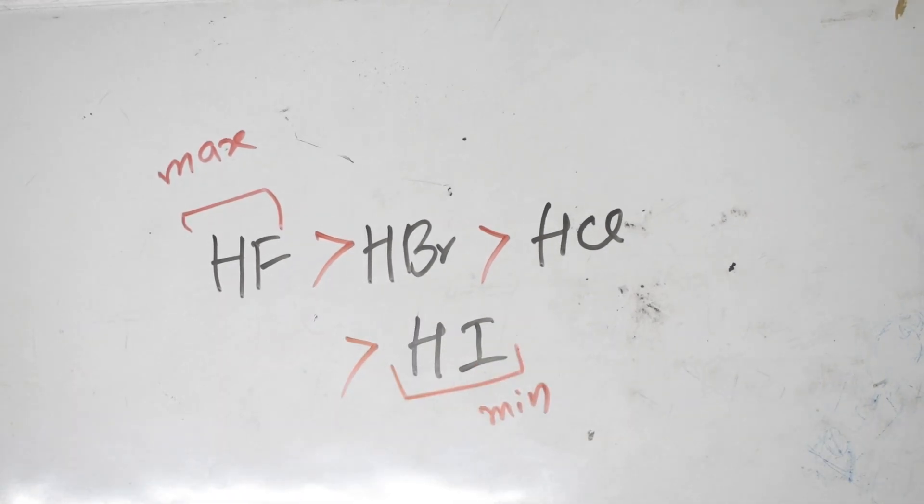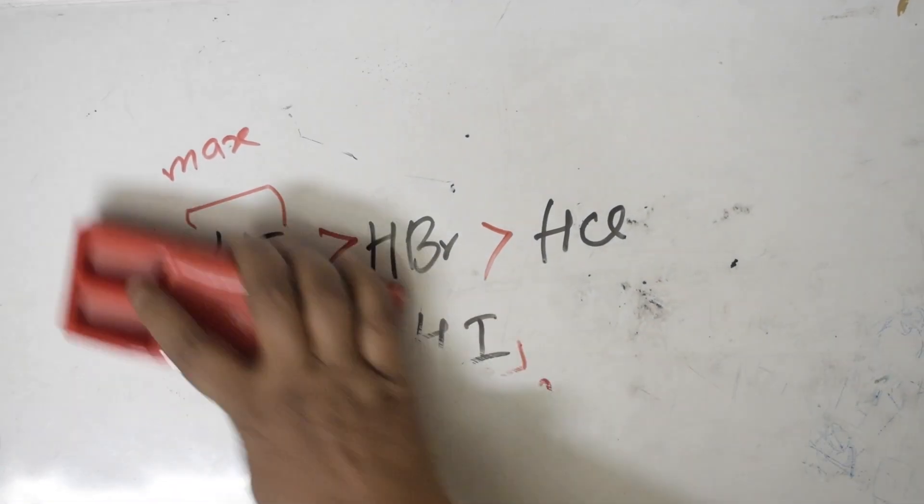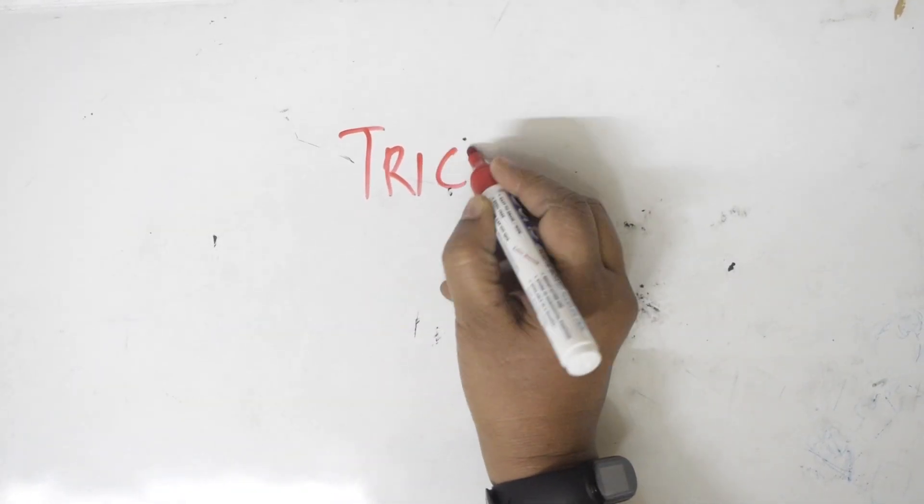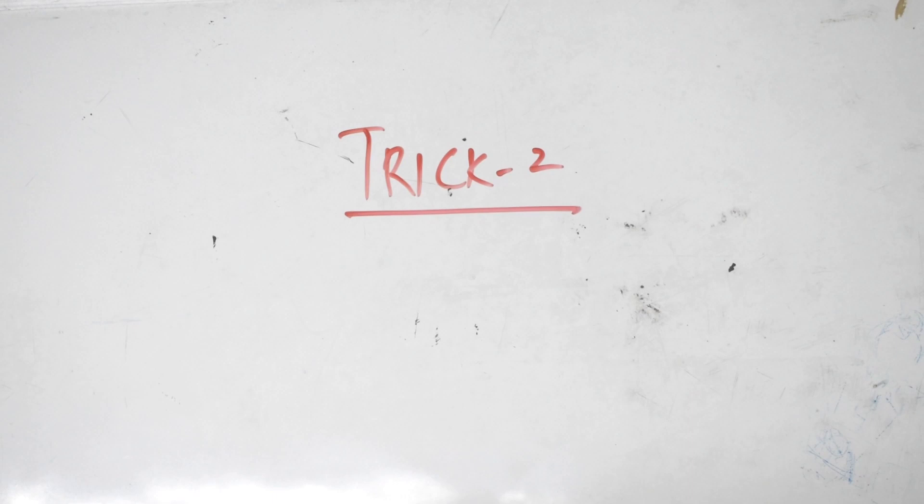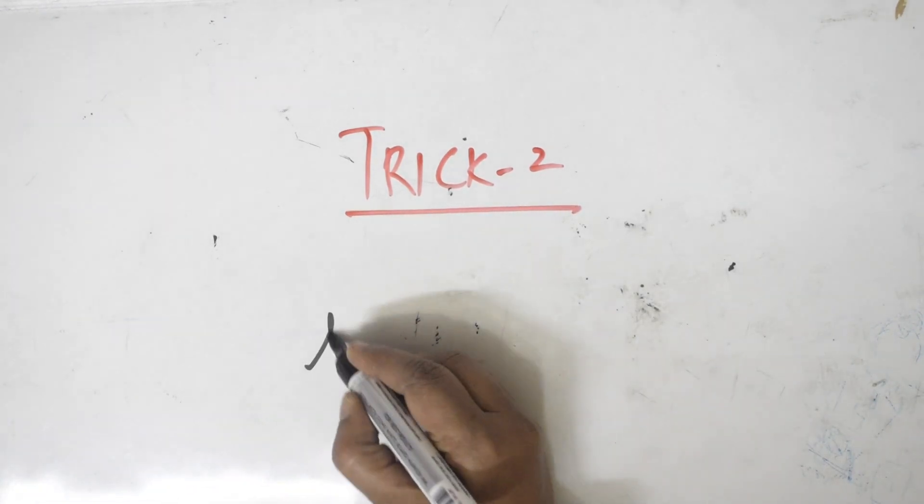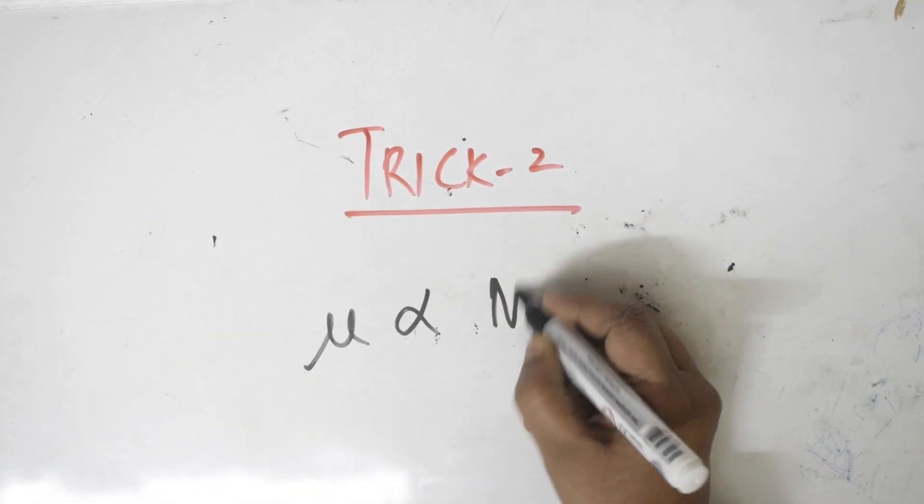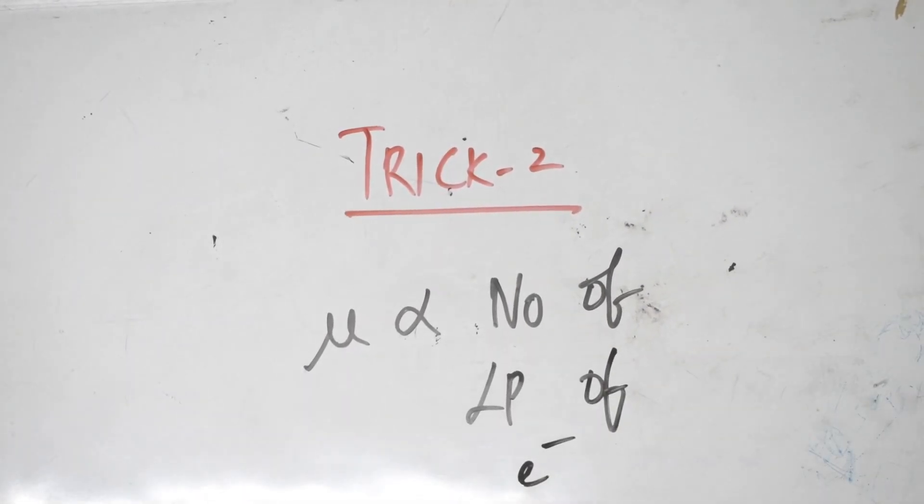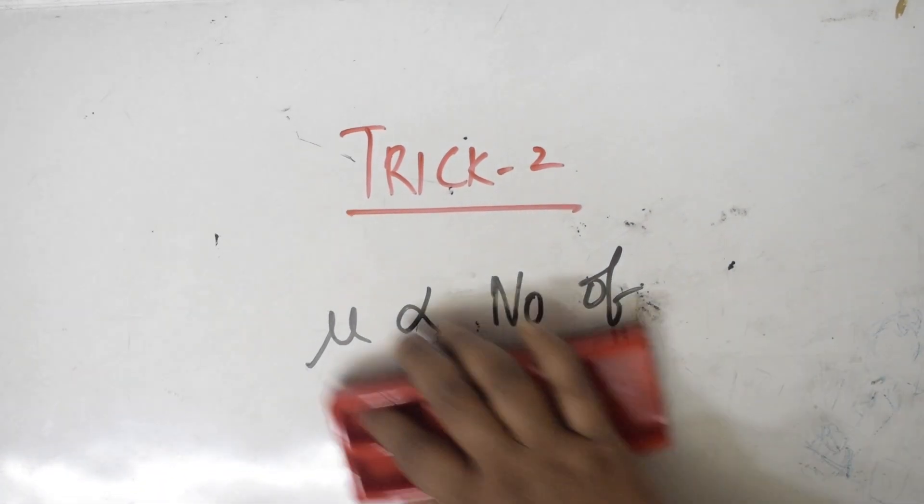Let us see one more trick, that is trick number two. What is trick two? You remember dipole moment is directly proportional to number of lone pairs of electrons.